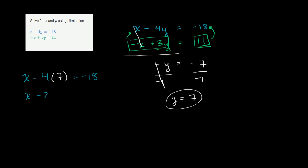Let's simplify it. You get x minus 28 is equal to negative 18. Now to solve for x, and we've done this many times before, we just add 28 to both sides. So let's add 28 to the left, 28 to the right. And we are left with x is equal to negative 18 plus 28. It's the same thing as 28 minus 18, which is 10. So we get x is equal to 10, and y is equal to 7.